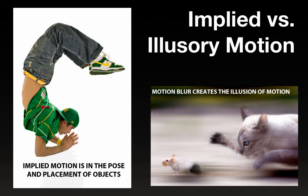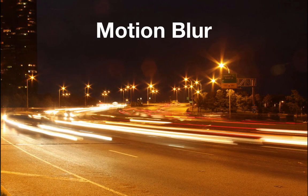So, a couple of visual examples for implied versus illusory motion. Implied motion on the left here is in the pose and the placement of the objects — that character cannot possibly hold that pose, they must be in motion. And then the illusion of motion is created on the right there from the motion blur. Here's another example of motion blur: a long exposure on South Lakeshore Drive in Chicago. You can see the headlights coming through, and it gives you a very strong sense of motion.